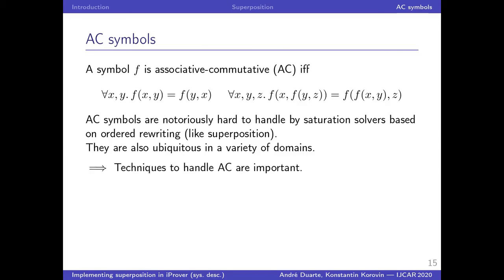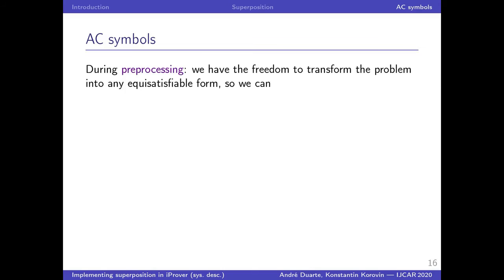Well, during preprocessing, we can do whatever transformation we want as long as it preserves satisfiability. So we normalize AC terms by making them right associative and sorted with respect to some order. In our case, a total extension of the reduction order used for superposition.